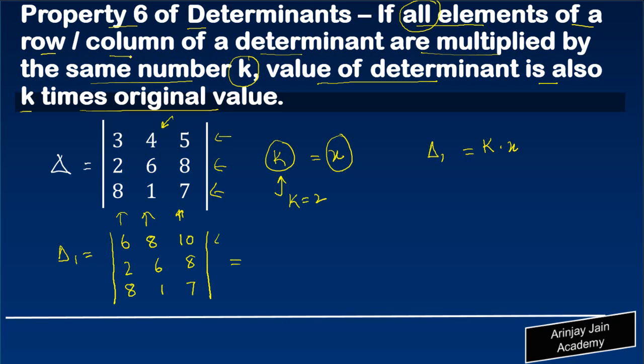Okay, here basically what we did was we multiplied k with r1 where k is equal to 2, right. According to this logic, the revised value which we will get for delta 1 should be 2 times the value of delta.